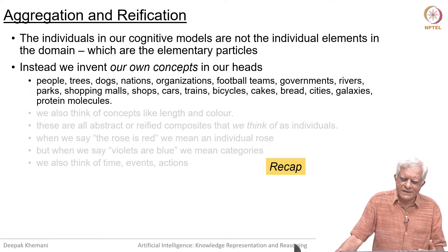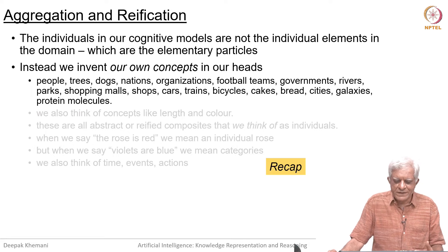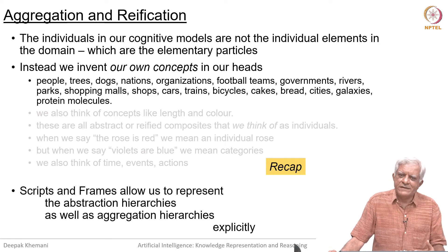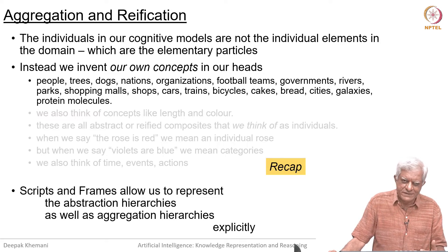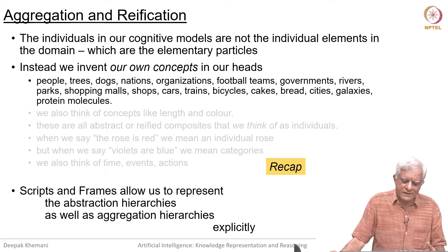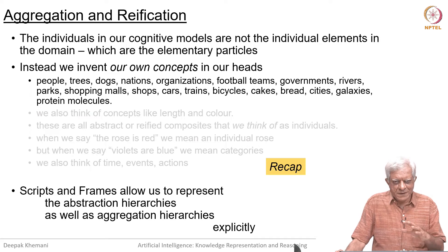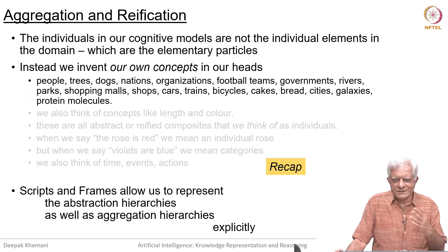As we said at that time, we invent our own concepts in our heads — people, trees, dogs, nations, organizations and so on. What we are going to see now is that with those representations we can do further aggregation and further abstraction. Scripts and frames allow us to represent abstraction hierarchies as well as aggregation hierarchies, and we do so explicitly now. We will have a representation of the whole as well as the representation of the parts that make up the whole, and the relations between not only the different parts but also between parts and the whole.